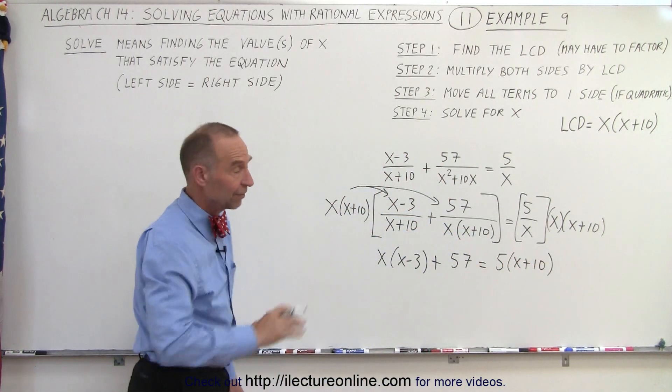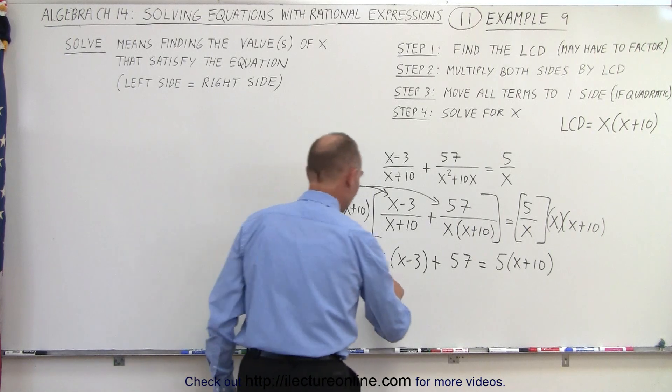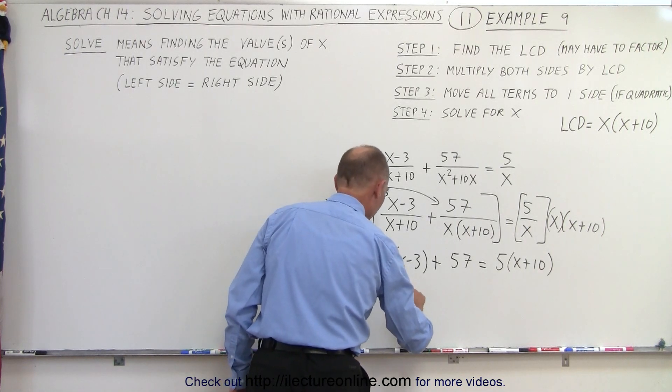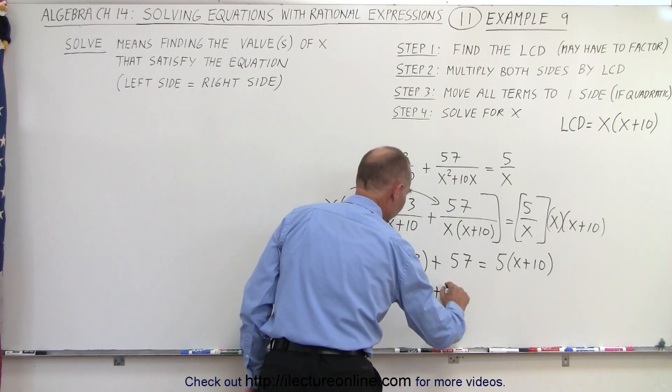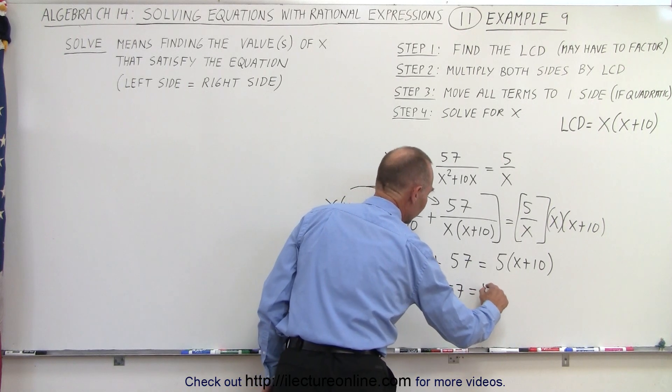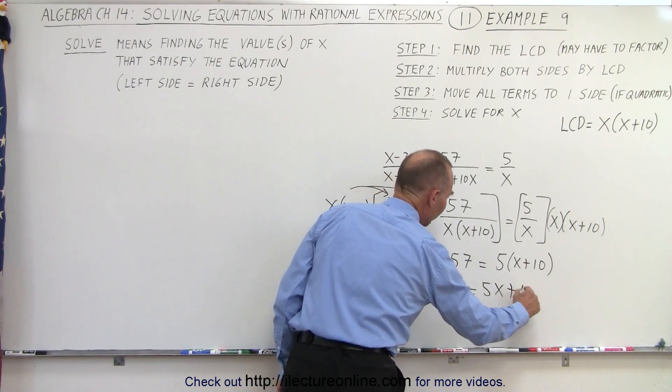Now we can go ahead and multiply everything through to see what we get. x times x is x squared minus 3x plus 57 equals 5x plus 50.